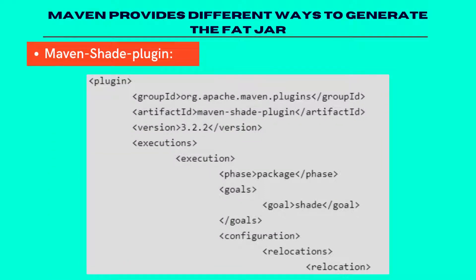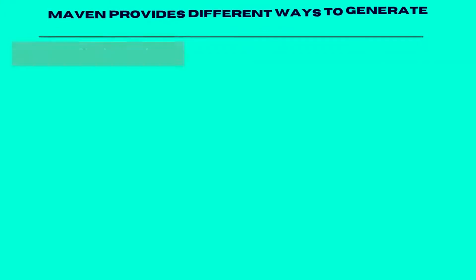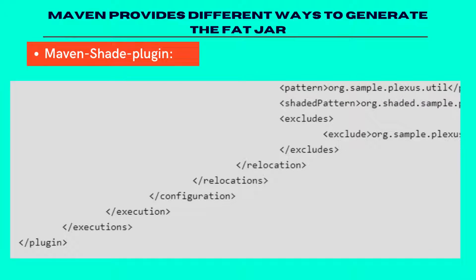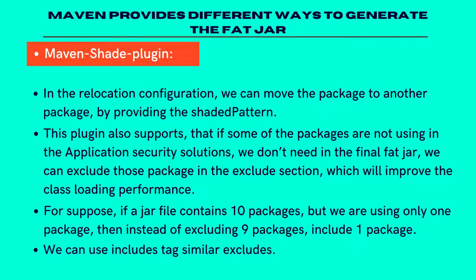The second one is the Maven Shade Plugin. In the relocation configuration, we can move a package to another package by providing the shaded pattern. This plugin also supports excluding packages that are not used in the application, so we don't need them in the final fat jar. We can exclude those packages in the exclude section, which will improve the class loading performance. For example, if a jar file contains 10 packages but we are using only one package, then instead of excluding 9 packages, we can include that 1 package using the includes tag, similar to excludes.